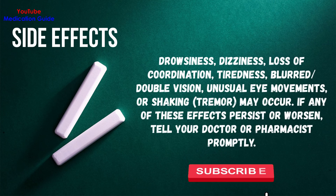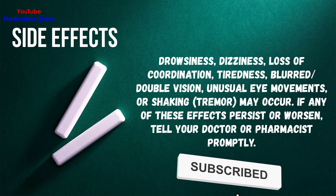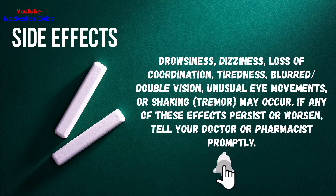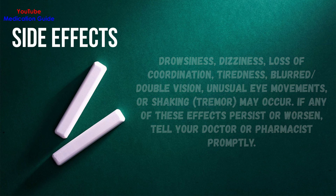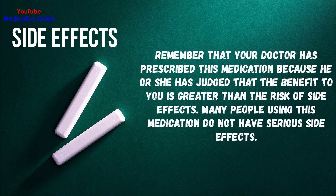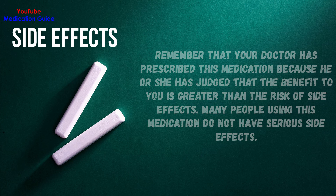What are the side effects of Neurontin? Drowsiness, dizziness, loss of coordination, tiredness, blurred or double vision, unusual eye movements, or shaking may occur. If any of these effects persist or worsen, tell your doctor or pharmacist promptly. Remember that your doctor has prescribed this medication because he or she has judged that the benefit to you is greater than the risk of side effects. Many people using this medication do not have serious side effects.